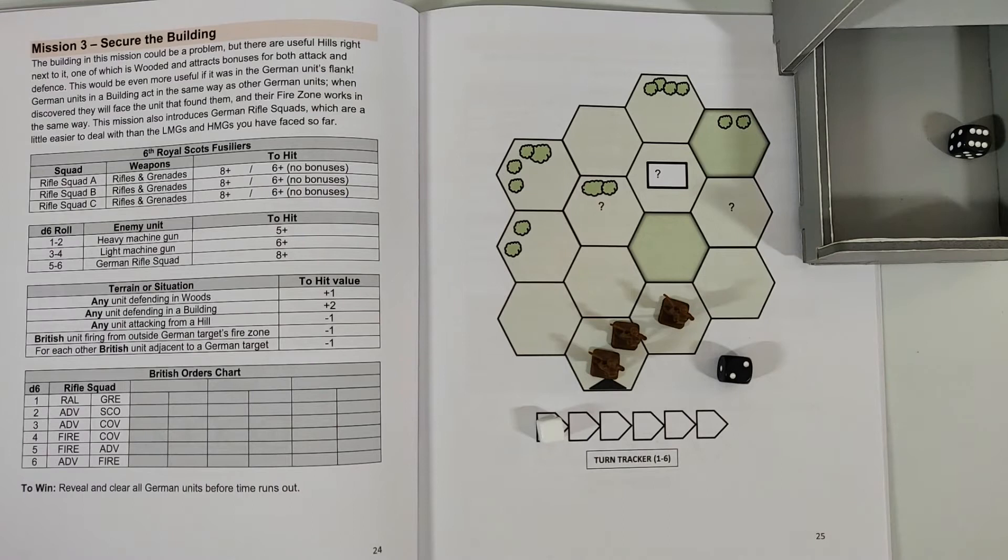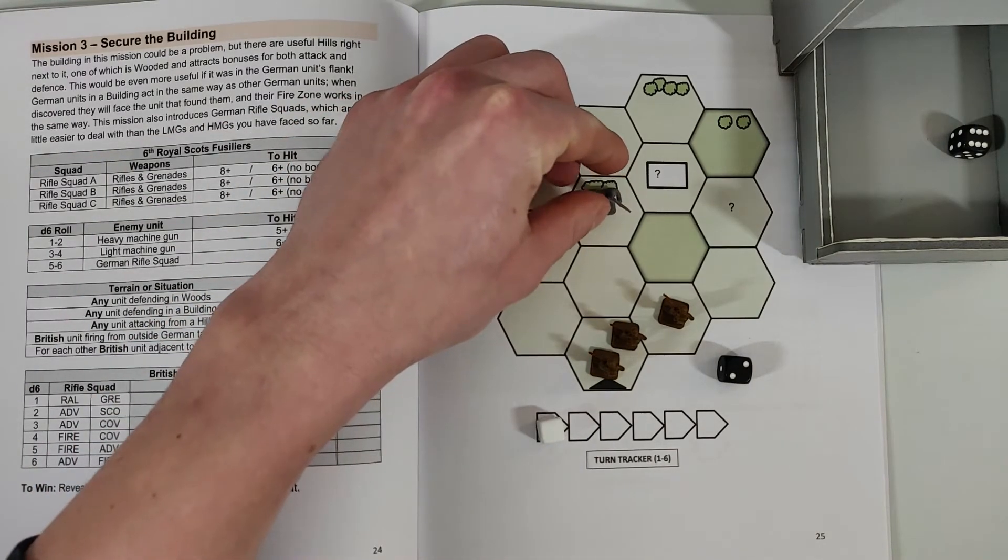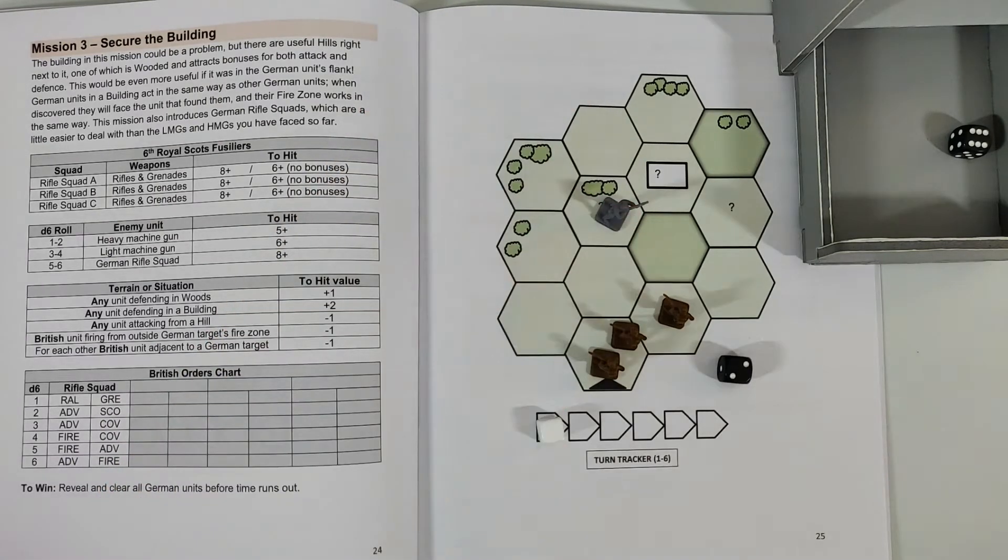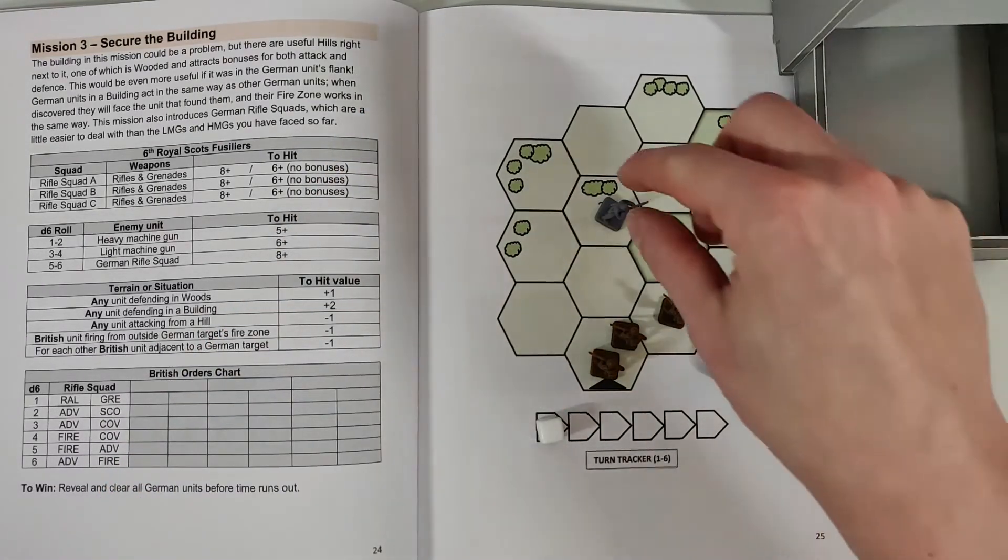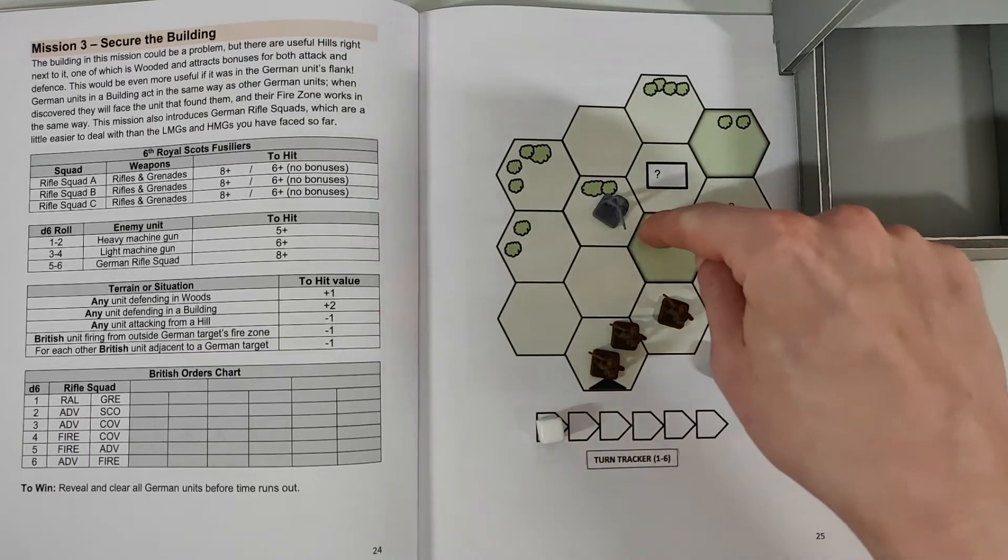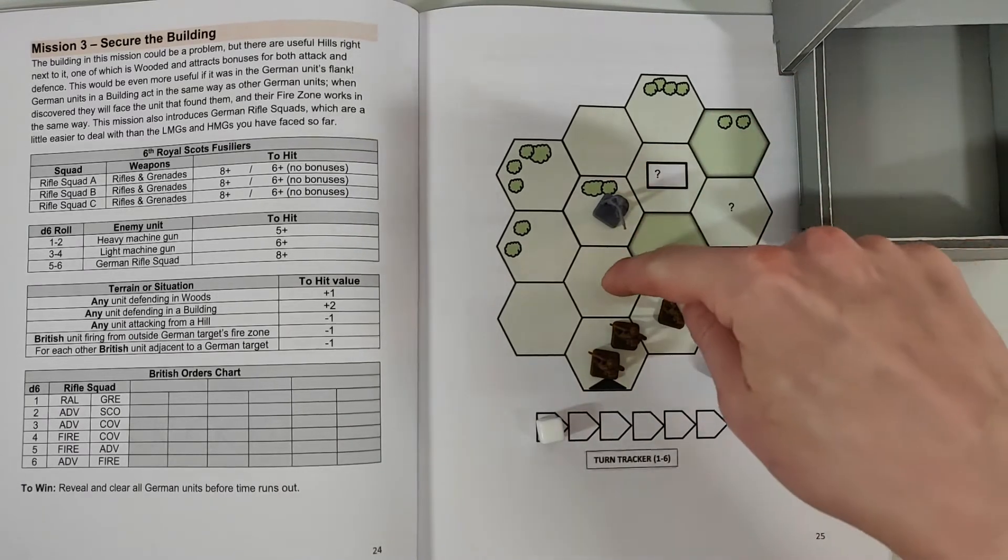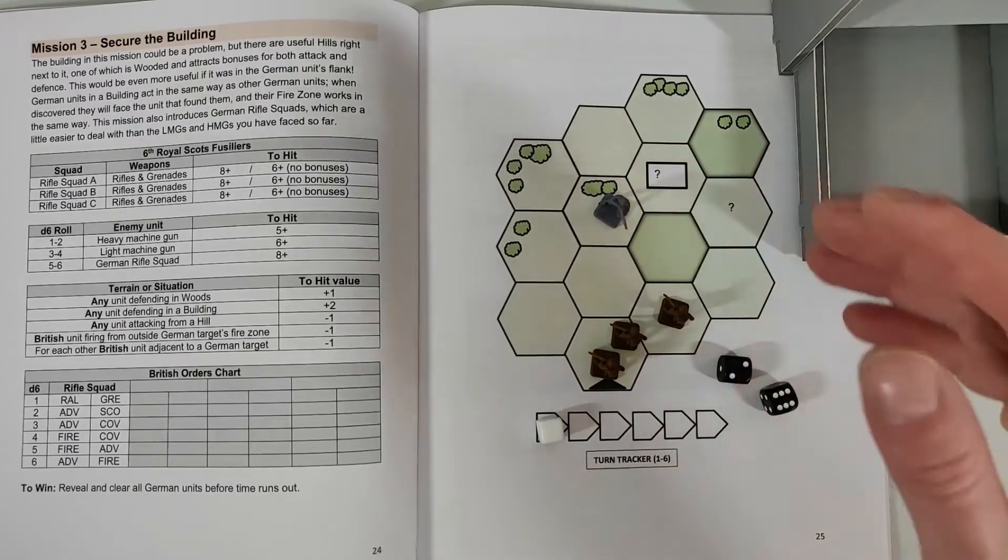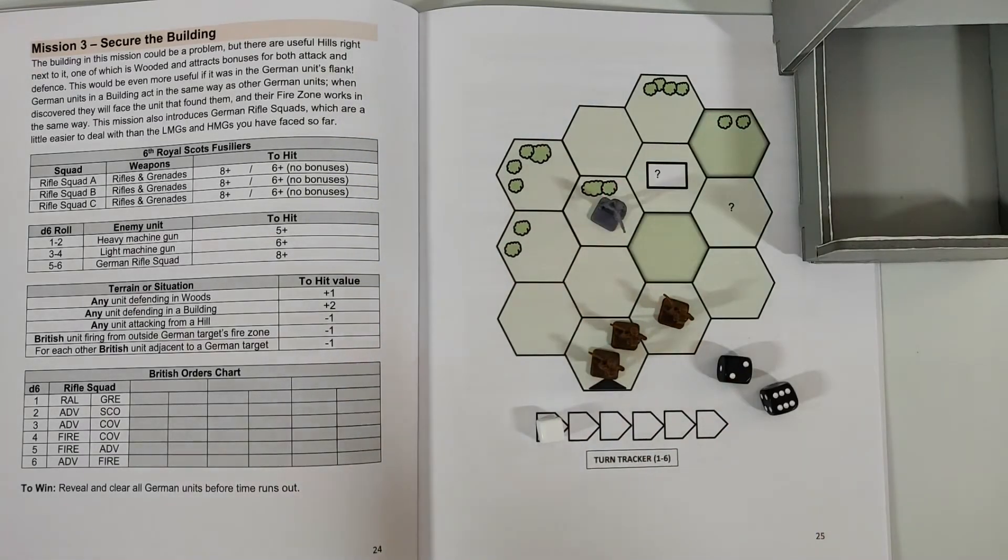And we roll a six, so we get that new kind of unit which is a German rifle squad. That's perfect because they're not so dangerous. So the fire arc of the rifle squad is gonna be the arc that he's facing, so it's gonna be this, this, and this, so it's gonna be easy to flank him.